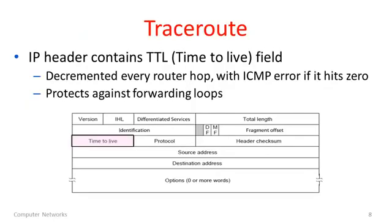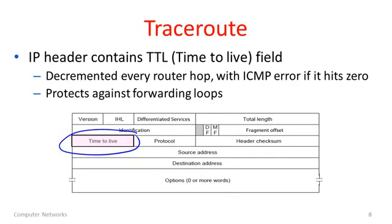To wrap up information on ICMP, let's look at how traceroute uses ICMP. The IP header includes a time to live field — a value placed on the packet when it's sent into the network, decremented every time the packet goes through a router. So it's really a hop limit field; that's an old name. If this counter ever reaches zero, the router throws away the packet and sends an ICMP error message back to the source. The purpose of this time to live field is to protect against forwarding loops — if forwarding tables had a loop in them, packets could get caught going round and round and clog up the network, so the TTL field is important for robustness.